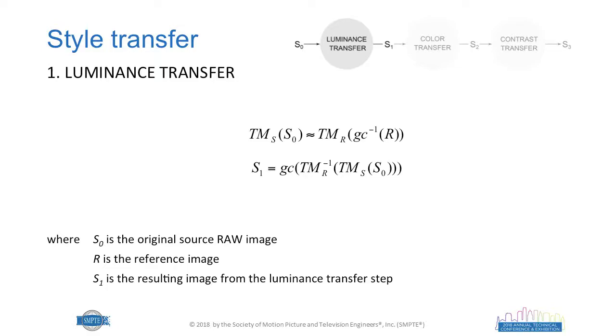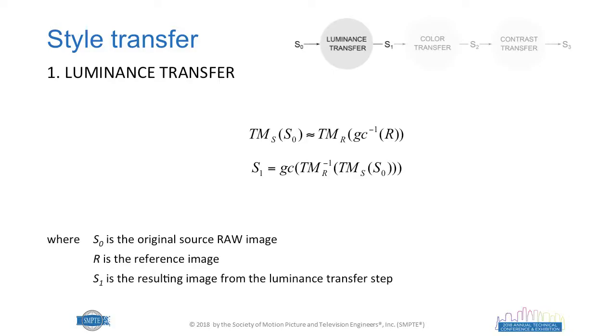We apply the tone mapping algorithm to the linearized reference image — since our reference image is not linear, we need to linearize it — getting a constrained histogram-equalized result. We also apply the tone mapping to our source image, so both will have a constrained luminance histogram, and we can assume they are equivalent. To get the luminance of the reference, we apply to the source the inverse of the two tone-mapping functions and the inverse gamma correction, yielding S1 — the result of our luminance transfer step.